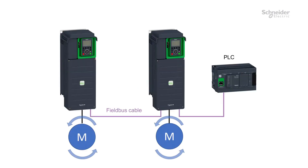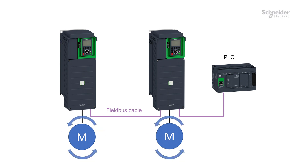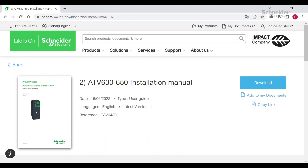If a communication error is triggered only when at least one motor is running, it may be an EMC disturbance. You must check that the wiring rules are followed. These wiring rules are provided with details in the installation manual of the ATV600.